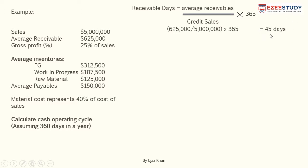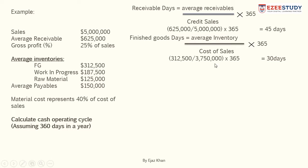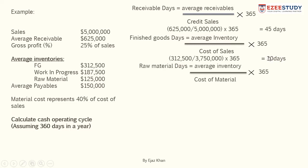For finished goods days, we use average inventory divided by cost of sales multiplied by 365. We don't have cost of sales directly, but the gross profit is 25%, meaning 75% of sales is cost of sales. So 75% of 5 million equals 3.75 million. Dividing average finished goods inventory of 312,500 by cost of sales of 3.75 million and multiplying by 365 gives us 30 days.